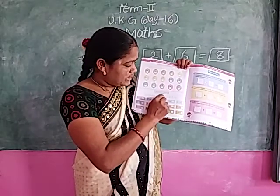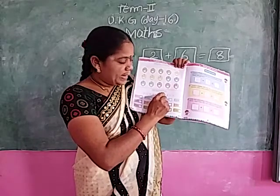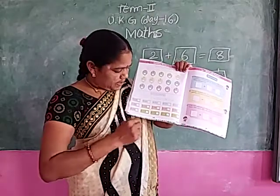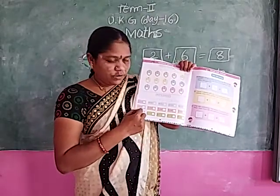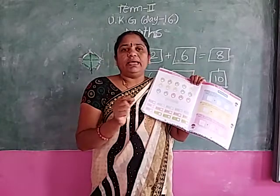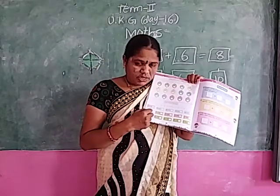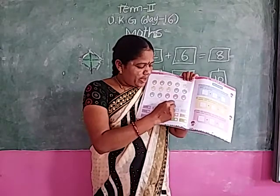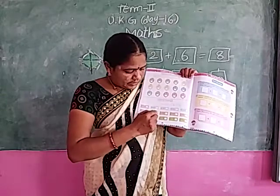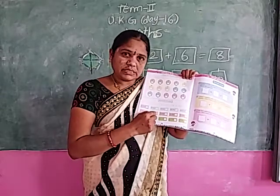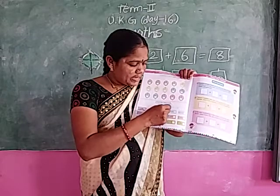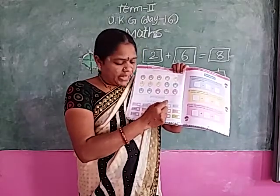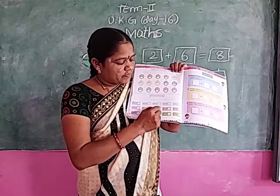6 plus 1 — circle the 6 on the number line, move forward 1 time. The answer is 7. 6 plus 1 equals 7. Next: 1 plus 0 — 0 means nothing. 1 plus 0 equals 1. Next: 7 plus 3 — circle the 7 on the number line, move forward 3 times. What is the answer? 7 plus 3 equals 10. 1 plus 8 — circle the 8, move forward 1 time. Where are we? 9. 1 plus 8 equals 9.